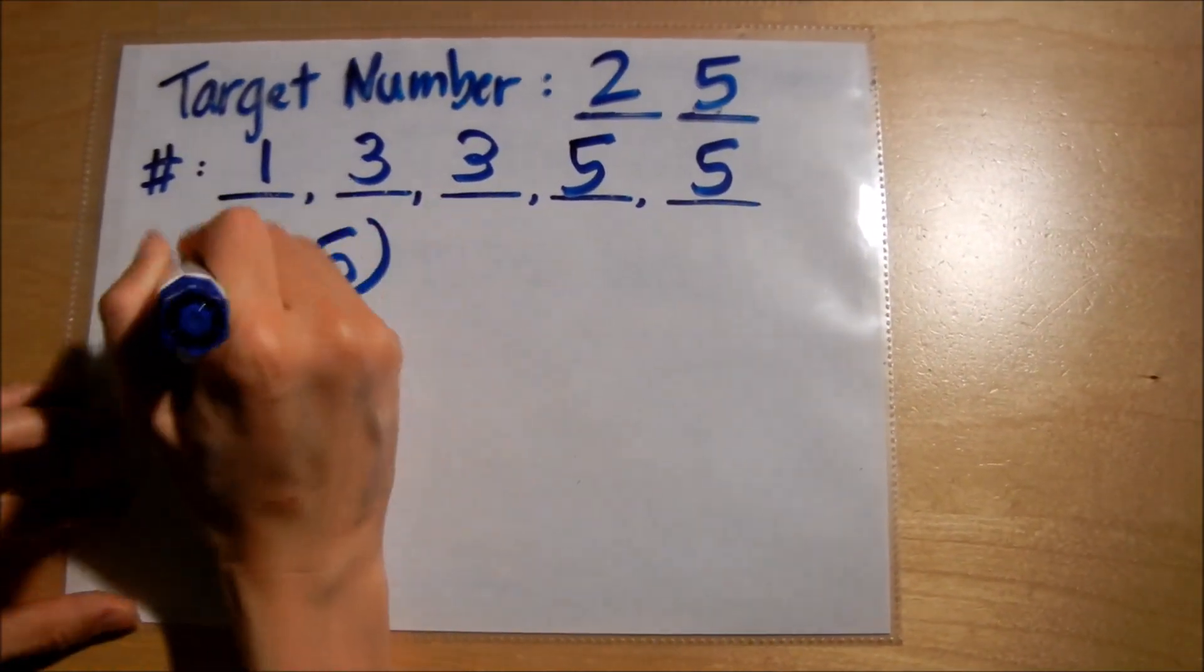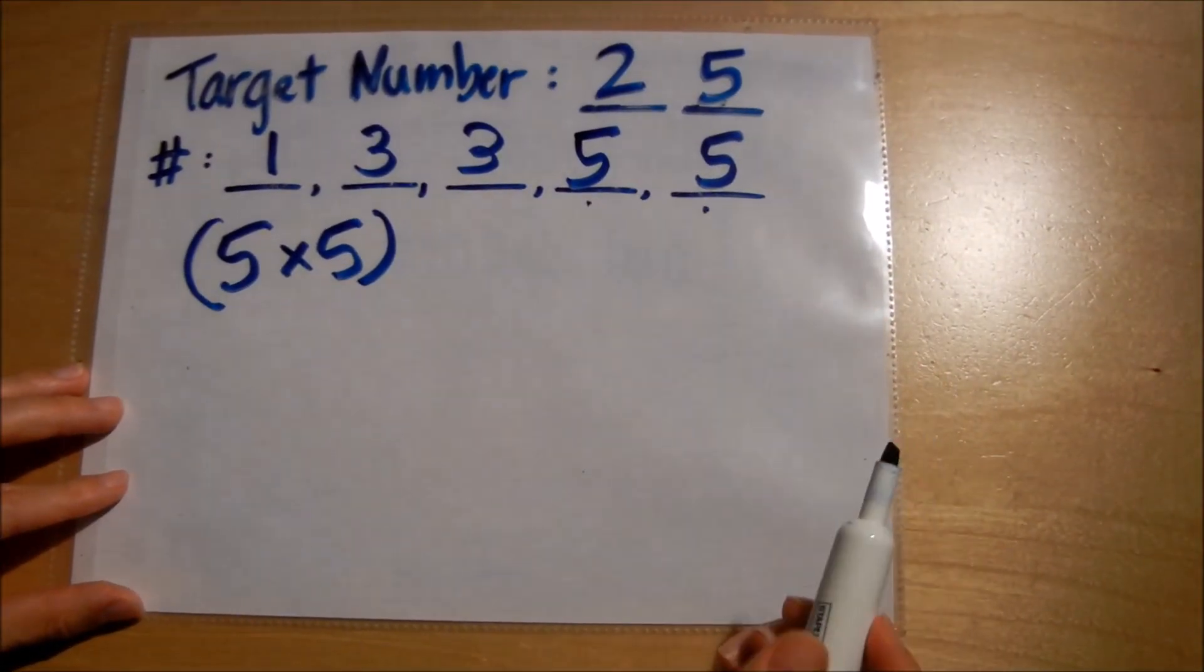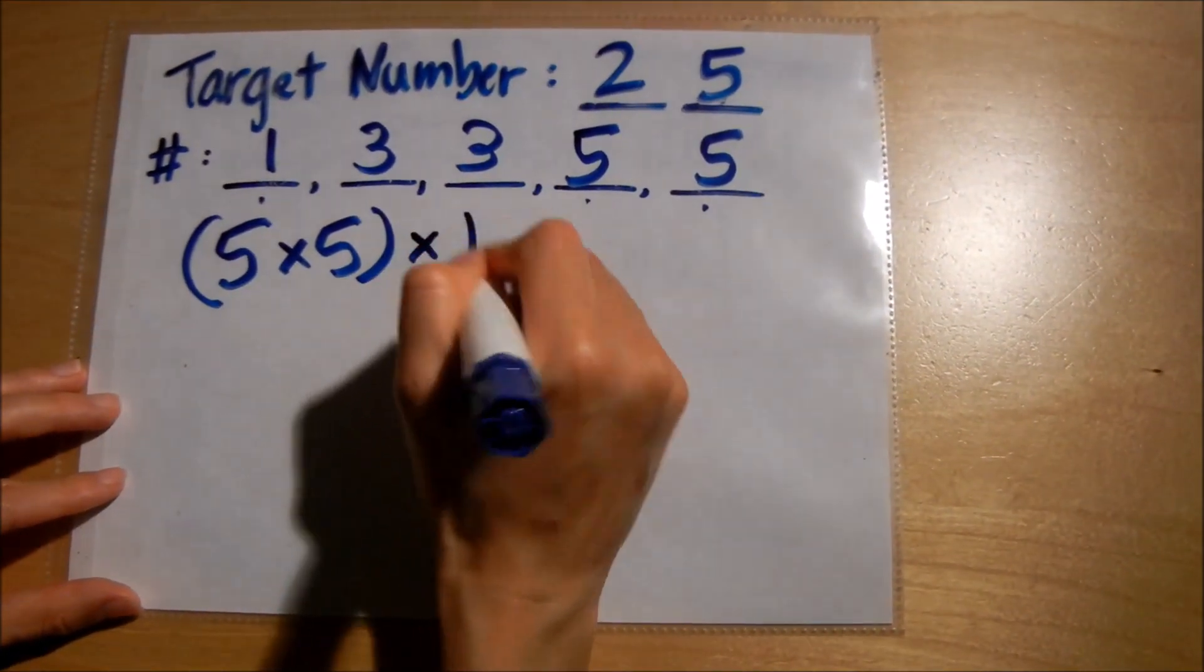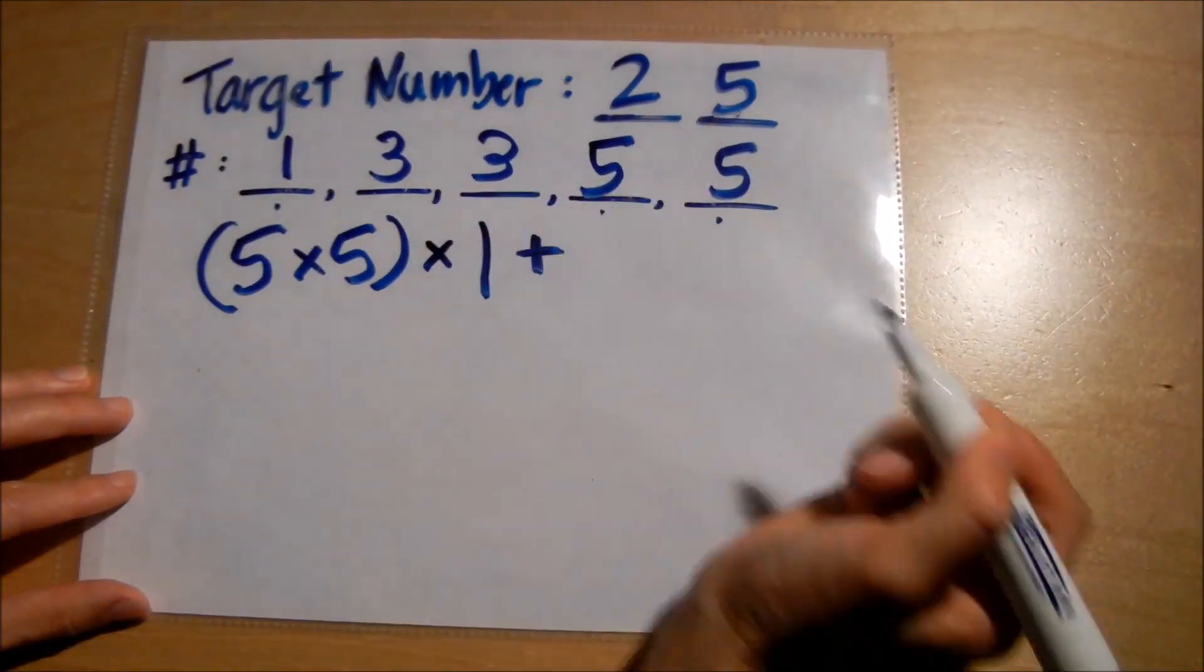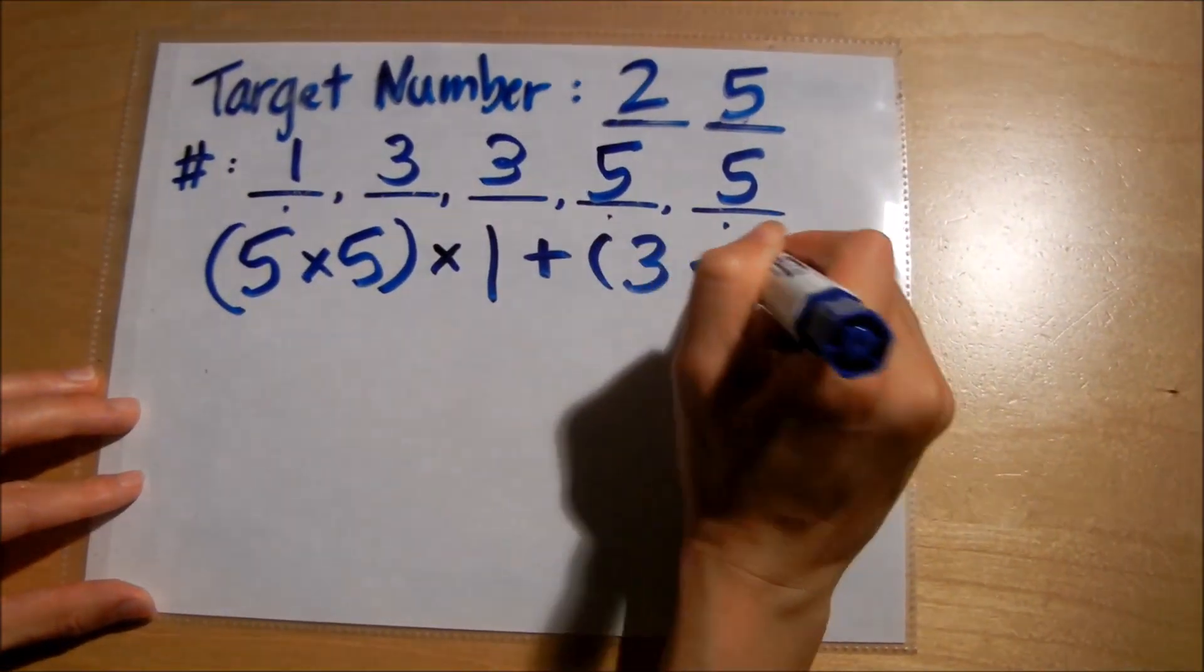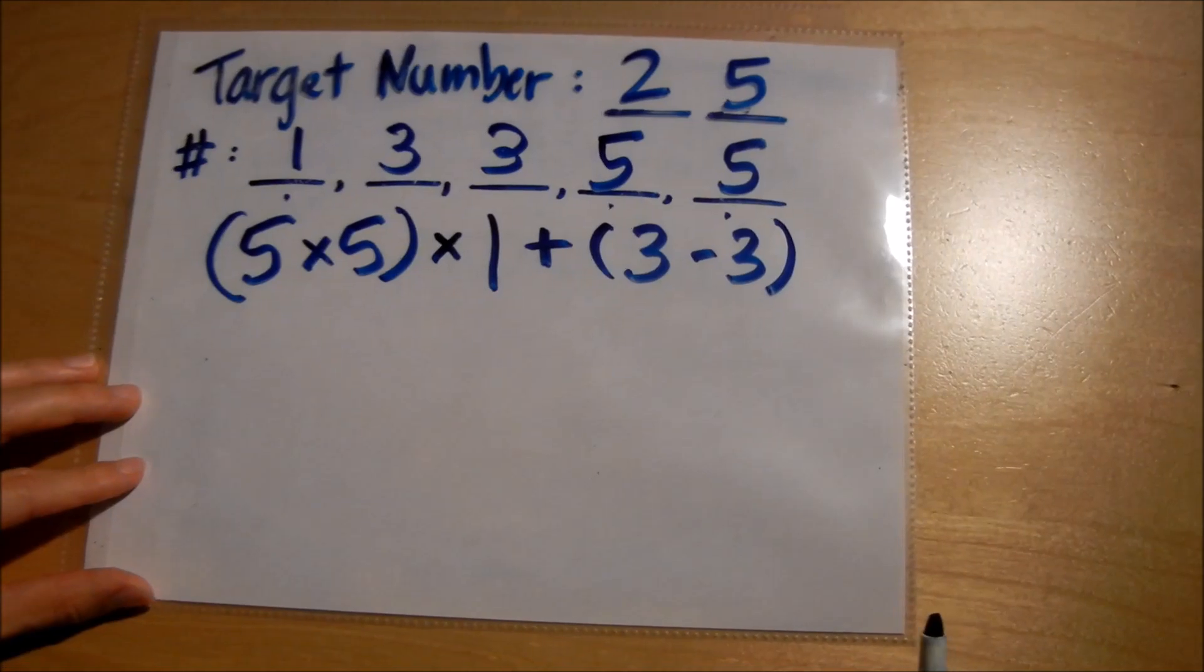I would do five times five times one, which keeps it 25, and then I would add three minus three.